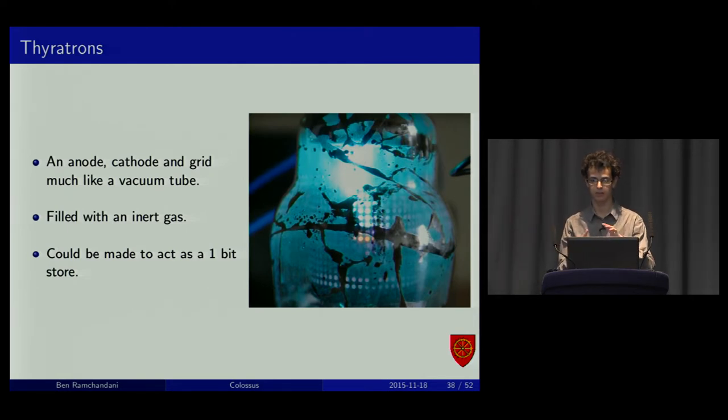They also had thyratrons. Instead of vacuum inside, they had an inert gas, maybe you see them. It had an anode, a cathode, and a sparking grid. If you spark the grid while there was a voltage across it, you actually get plasma going between the anode and cathode and that allowed it to carry a current. You could then turn the grid on and off as much as you liked and it would keep that current going. This means acted as a one-bit store. If you wanted to quench it, it was called yet to drag the anode below the voltage of the cathode and that would turn it off.